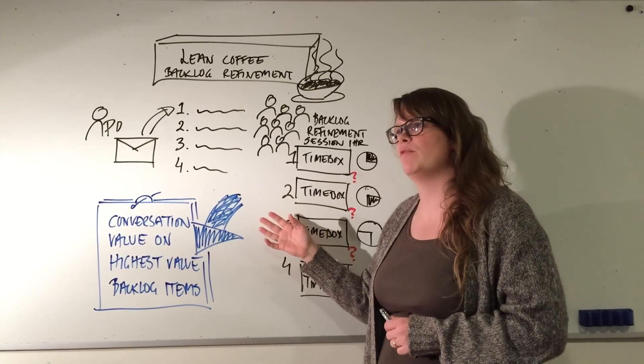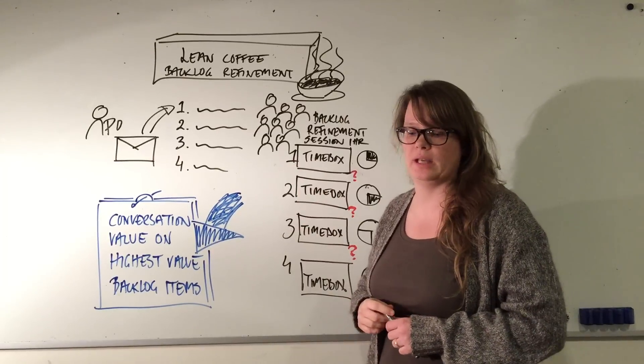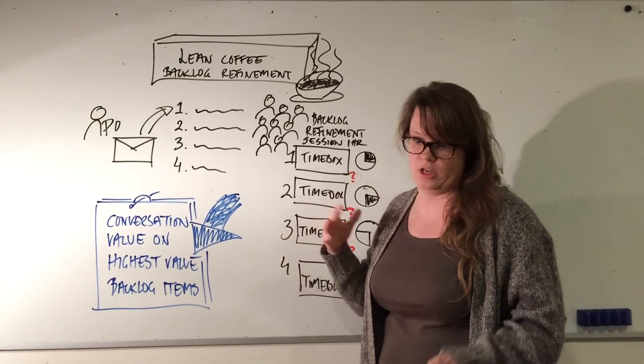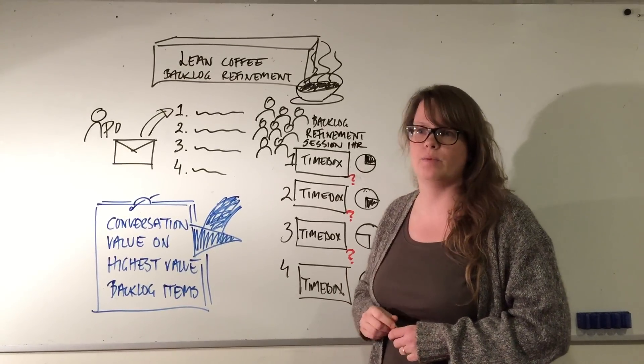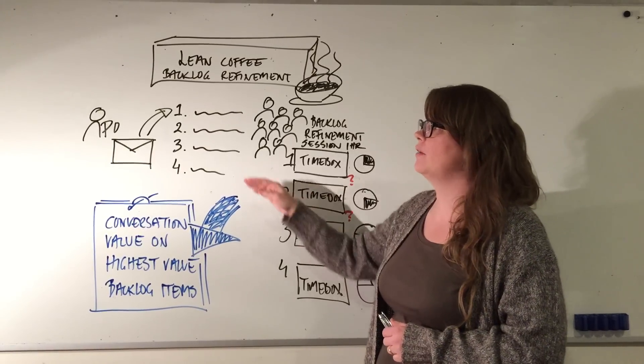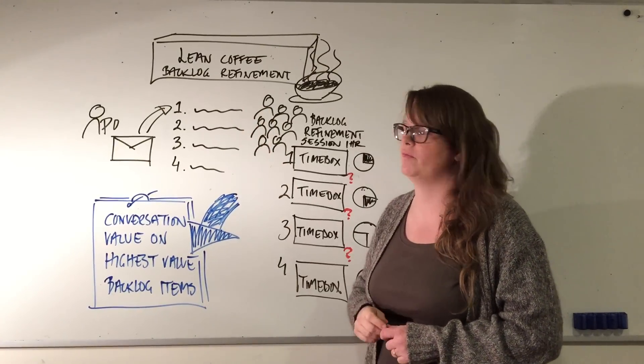By sending that out the day before in order of importance, the team can actually prepare and do some research. They can check their code base, check JIRA items, go online and see what mistakes other teams have made, and prepare in order of importance.